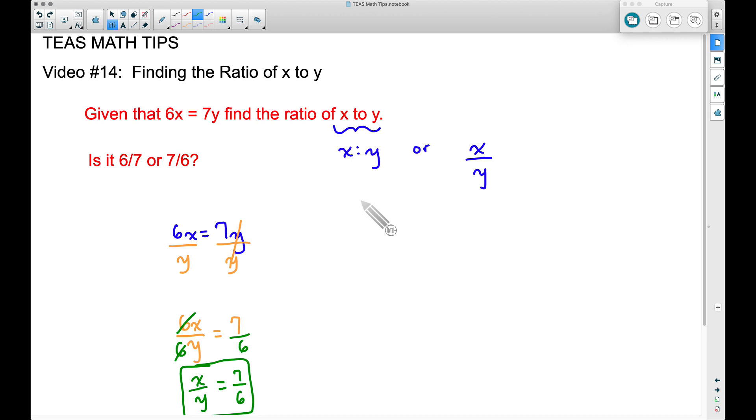Just bear in mind this as well. The ratio of x to y, two different ways to look at it: we can say 7 to 6, or 7 over 6. Either one of these is correct.